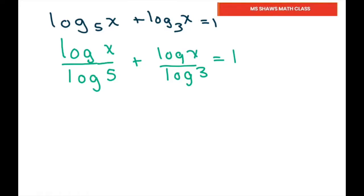Now we're going to factor out log x from the numerator. If I factor out log x from the whole expression, that gives us 1 divided by log 5 plus 1 divided by log 3 equals 1.